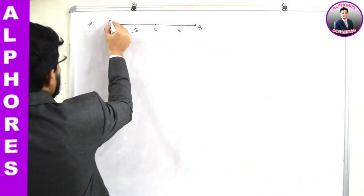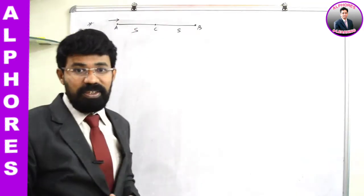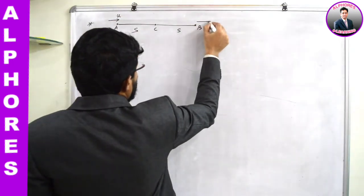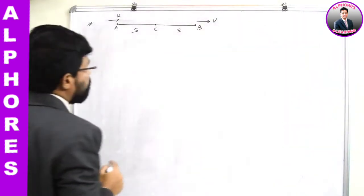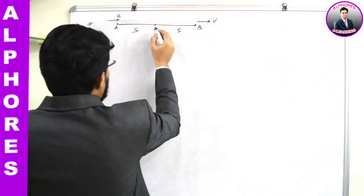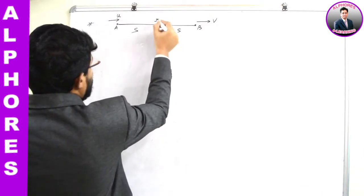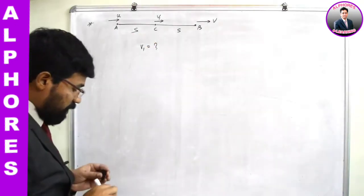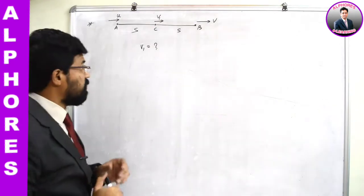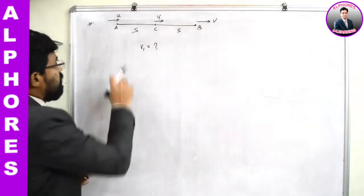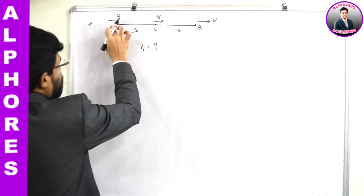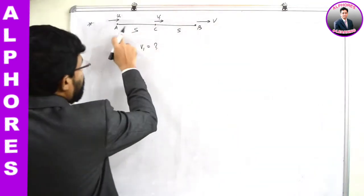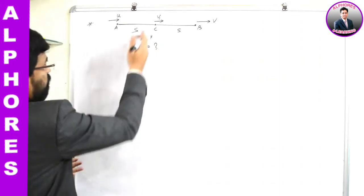Initially, let us say a body is travelling with uniform acceleration. At point A it has velocity u, and at point B when it crosses that point, let us say it has velocity v. My interest is to find out the velocity of the object when it is crossing point C — I will assume it as v1. What are the known quantities? The distance of separation between A and B, and velocities at A and B are both known. We have to find velocity at the midpoint, which I have taken as v1.